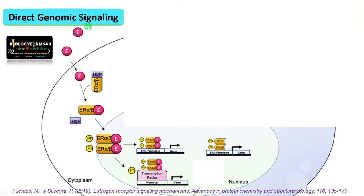As we all know, estrogen is a steroid hormone. This is a plasma membrane, and estrogen can easily diffuse through it since the plasma membrane is also made up of phospholipid. Estrogen receptors have two subtypes, alpha and beta. These receptors are bound to heat shock proteins in their inactive state.